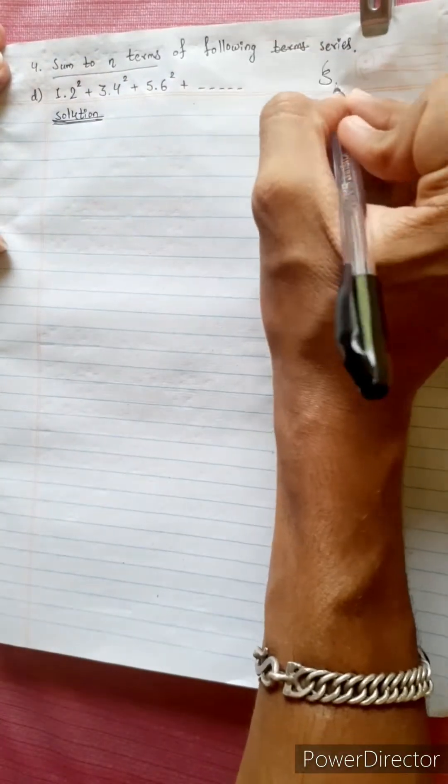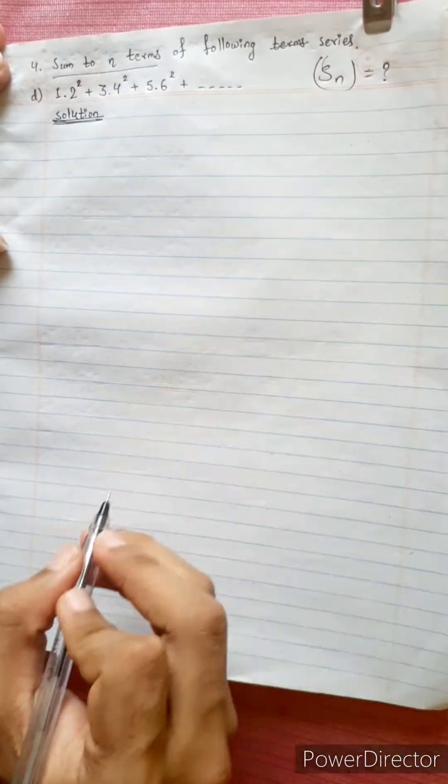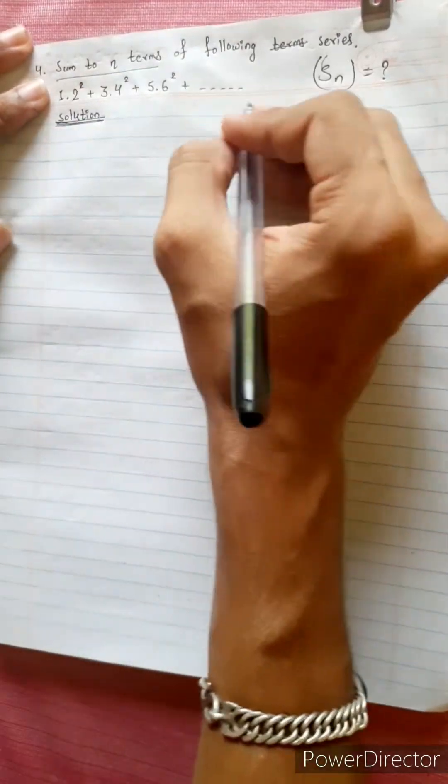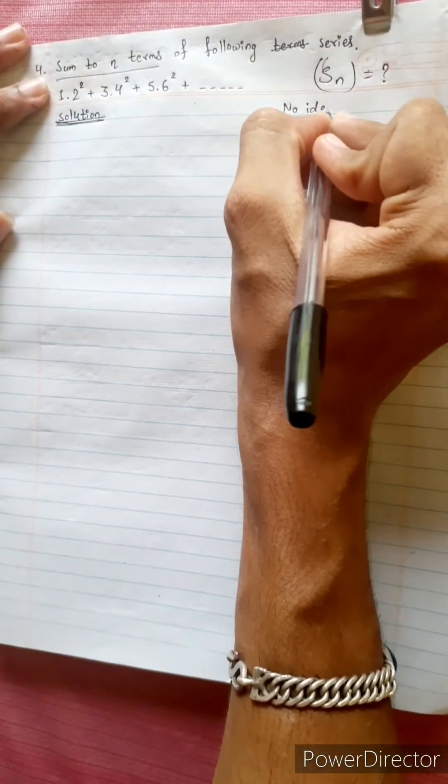Sum of 2n terms. Sn equals to what? Sn shows the question. This equation is not understood. No idea.